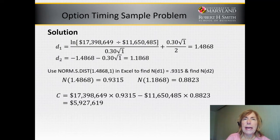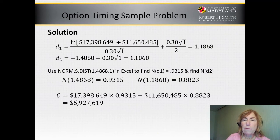Similarly, you'll find the value of N of D2 is 0.8823. Then you find the value of the call by using S, which is the project value we calculated of $17,398,649. The present value of the strike — waiting a year, the $12 million — has a present value of $11,538. That's like the strike or exercise price for the option.